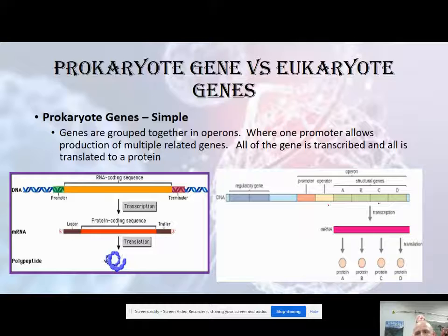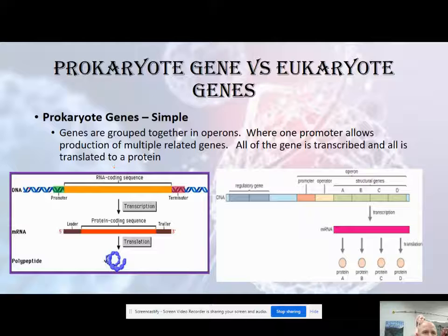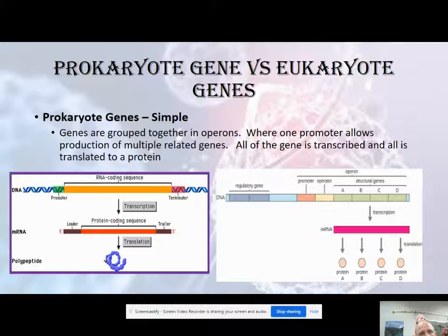The RNA will have a promoter region, then an operator region, and then the structural genes. RNA polymerase will attach to the promoter region along with things called transcription factors, right at the operator, and then it'll start writing the mRNA, which will eventually be translated into proteins. There's always a termination sequence on the DNA that terminates RNA polymerase and kicks it off. It's pretty cool that all the structural genes are right next to each other. We'll talk about the lac operon a lot starting tomorrow or next week.